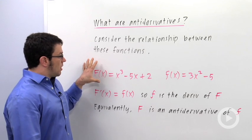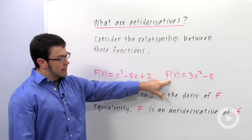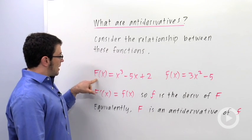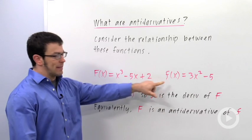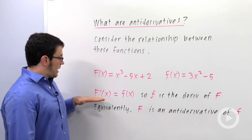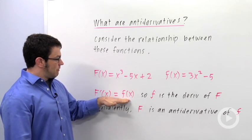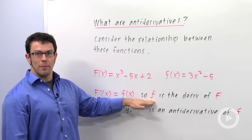What's the relationship between these two? Well, you probably recognize that little f is the derivative of capital F. If I differentiate this function, I get that one. So that's one thing you'll recognize immediately. Capital F prime equals little f. So little f is the derivative of capital F.